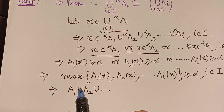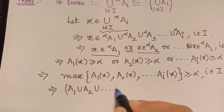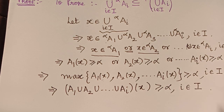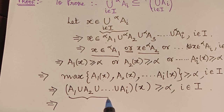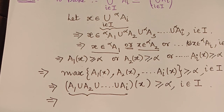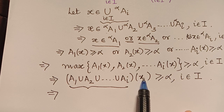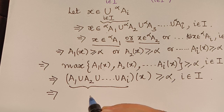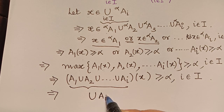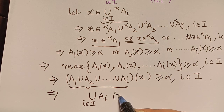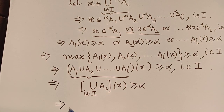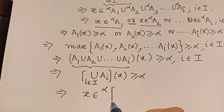Recalling that for two sets we use the maximum, here we consider infinite sets, so we have (A_1 union A_2 union ... union A_i)(x) ≥ alpha for i in capital I. In general, this can be written as (union of A_i for i in capital I)(x) ≥ alpha, meaning the membership grade of x with respect to the union of all these fuzzy sets is greater than or equal to alpha.